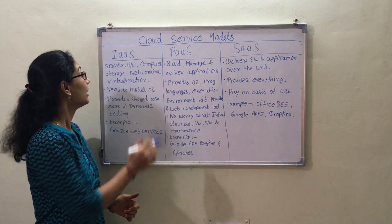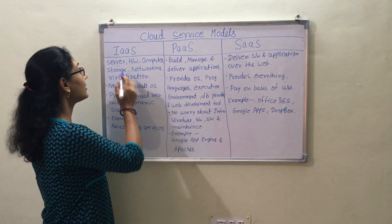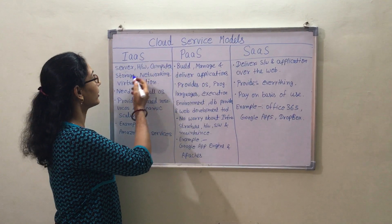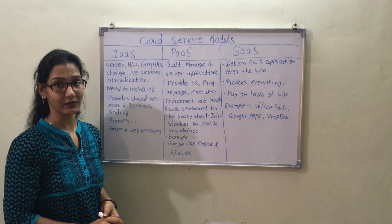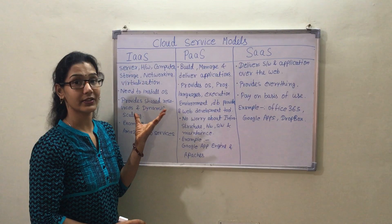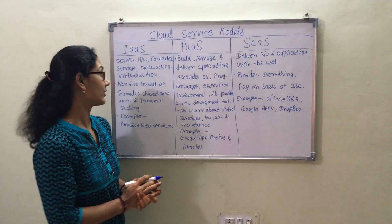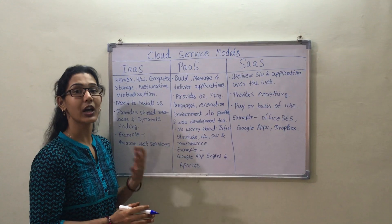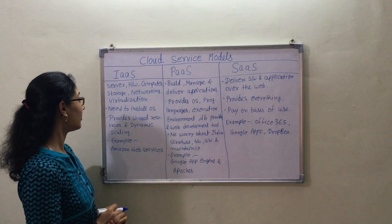The first one is IaaS, which stands for Infrastructure as a Service. Users can access all computing resources like server hardware, computers, storage, networking, virtualization, etc., without any investment. In IaaS we can get infrastructure and pay accordingly, so we don't need to worry about infrastructure — we only need to install operating systems or applications within the cloud infrastructure.